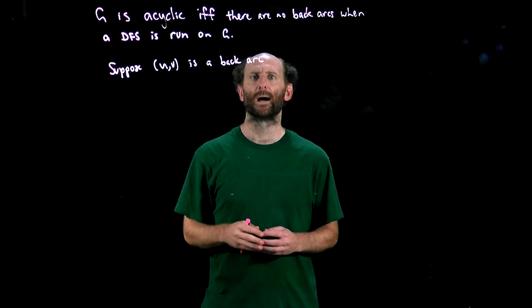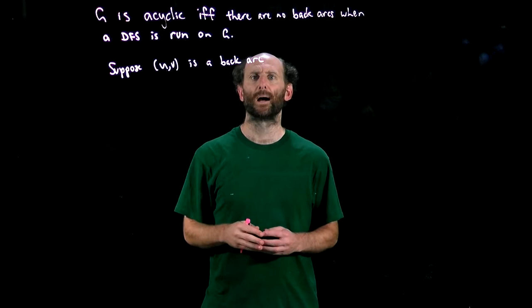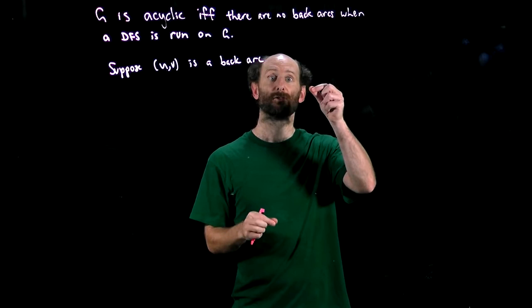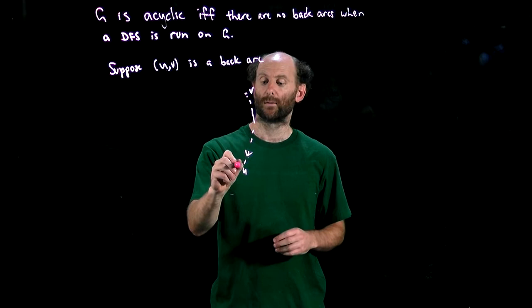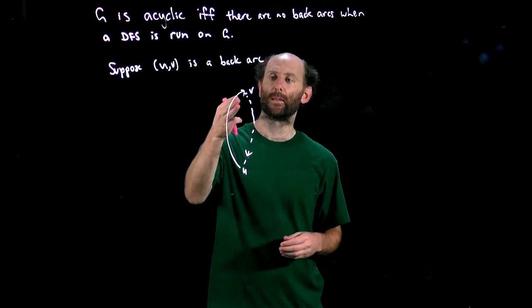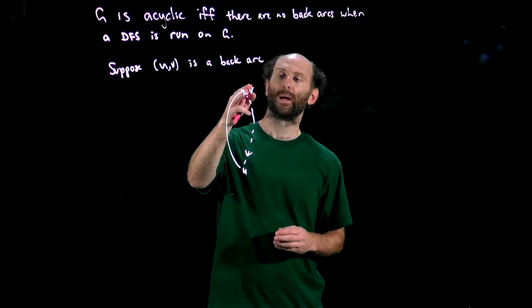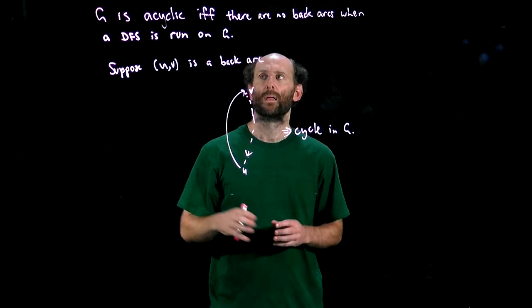What does it mean that uv is a back arc? Well that means that u is a descendant of v in the search tree so there's a path from v down to u in the search tree. It also means we've got this back arc going from u back up to v, so that means we can find a path from v directly to u and from u back to v, so we can find a cycle in G. Thus if G is acyclic then there are no back arcs in G.